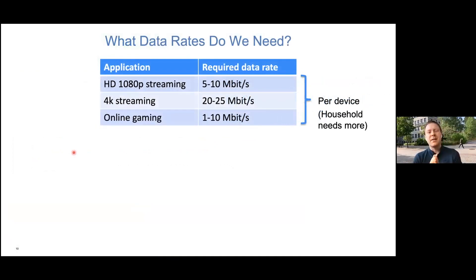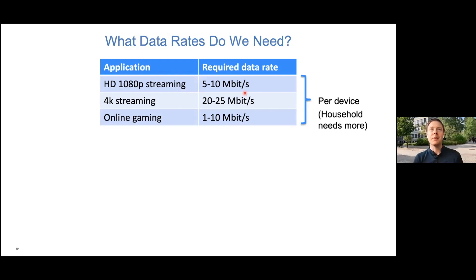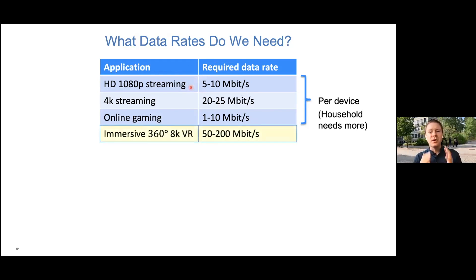But this raises the question: what kind of data rates do we really need and what should we use them for? The most demanding applications today are probably video streaming. Streaming HD 1080p video requires according to Netflix about five to ten megabits per second. Increasing to 4K might need 20 to 25 megabits per second. Online gaming typically requires less. In a household with many people, multiply by the number of people and you get up to 100 megabits or more, explaining why you need that for fiber connections. Even looking into the future - say everyone walks around with virtual reality glasses with 8K video at 360 degrees - researchers say you might need 50 to 200 megabits per second to deliver that.